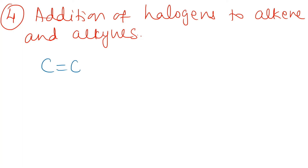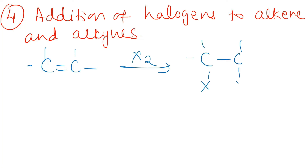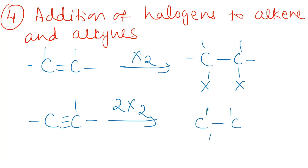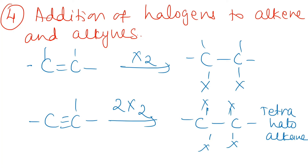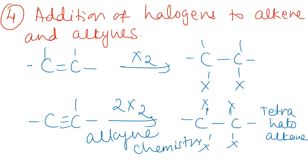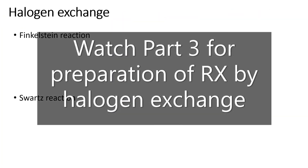According to these methods, alkene + X₂ gets converted to a di-substituted alkyl halide. Similarly, alkyne + X₂ gets converted to a tetra-substituted alkyl halide. The chemistry associated with carbon–carbon triple bonds is alkyne chemistry, and alkynes undergo addition reactions due to the presence of loosely held pi electrons. The last method for the preparation of alkyl halides is halogen exchange.